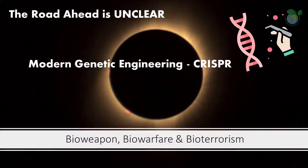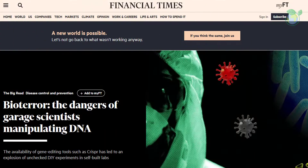The road ahead is unclear. In modern times, we have seen technological advances at the molecular level. Genetic engineering using CRISPR has the potential to correct genetic defects and treat disease. However, some experts are concerned about recent advances in gene editing technology. In the wrong hands, it has the potential for evil or malicious attempts. A Financial Times article reported that there is always the danger of rogue scientists manipulating unchecked DNA editing.